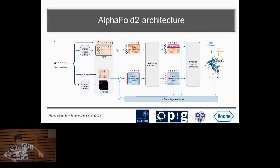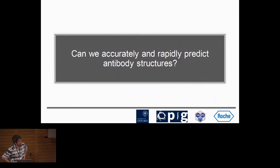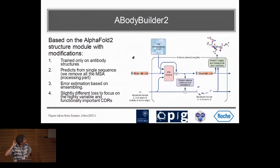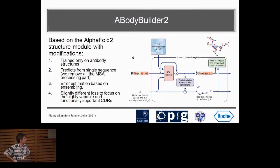So what we did was remove the MSA and the EvoFormer and just try to see if we could learn from the structure module directly from sequence. We took only the AlphaFold 2 structure module and trained it, modified slightly so it would take single sequences. We slightly changed the embeddings to make it more antibody-specific and adjusted the loss functions and architecture to work better with antibodies.